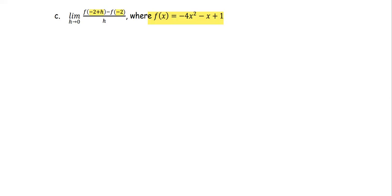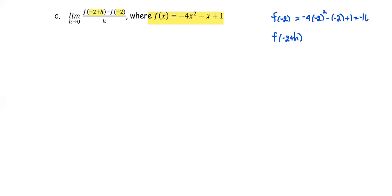First, we're going to find the value of the function at negative 2 and the function at negative 2 plus h, then bring all the terms over to the limit problem. At negative 2, f(x) equals negative 4 times negative 2 squared minus negative 2 plus 1, or negative 4 times 4, which is negative 16 plus 2 plus 1. That turns out to be negative 13.